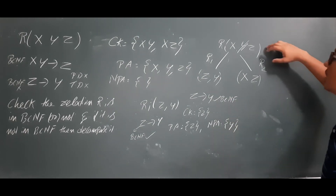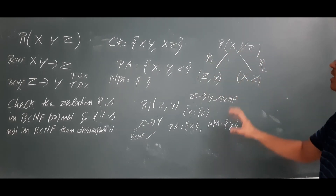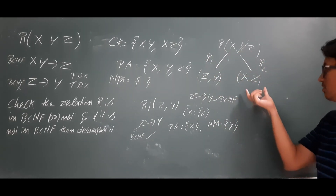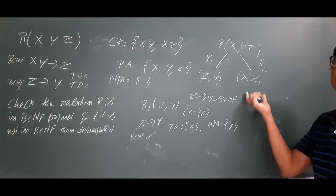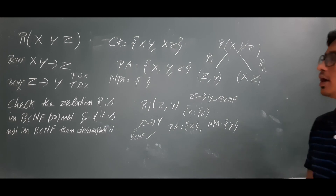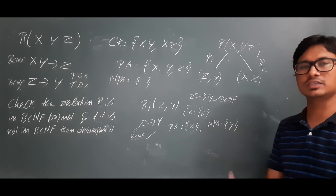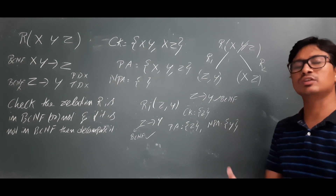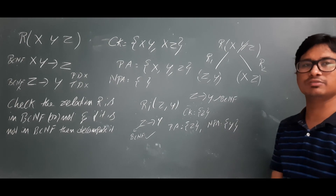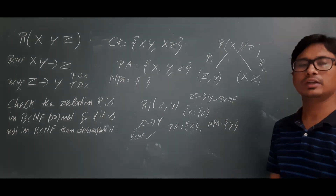So the original relation R is not in BCNF. After decomposition, R1 and R2 are both in BCNF. R2 is in BCNF because it does not consist of any functional dependencies. I hope you have understood how to check whether a relation R is in BCNF or not, and if not, how to decompose it into sub-relations that are in BCNF. Thank you so much.